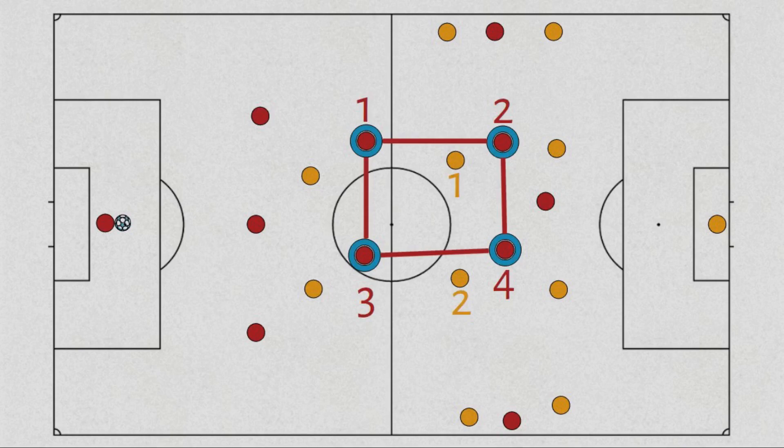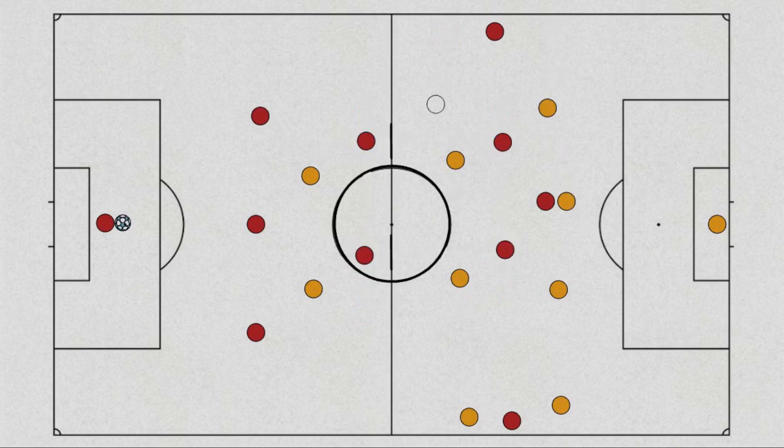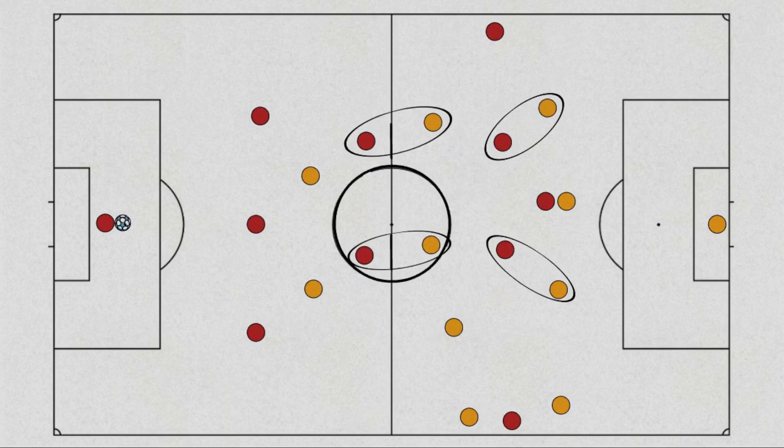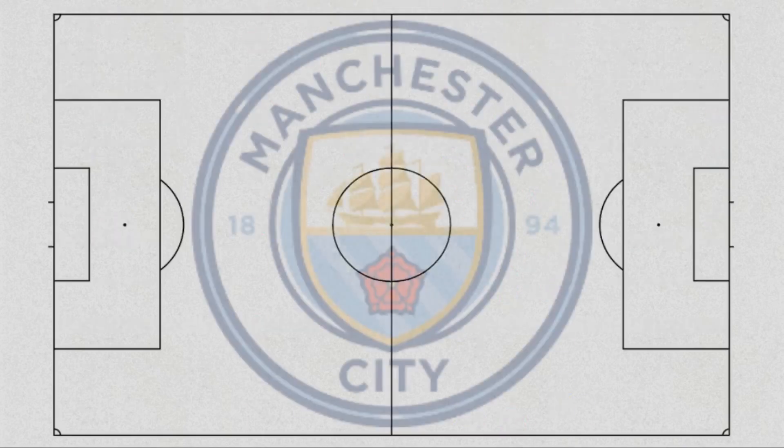The problem with using Shaw as an inverted full-back was it left United with only Garnaccio on the left. This allowed Wolves to tuck in from the right and take away the midfield overload from United.